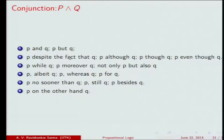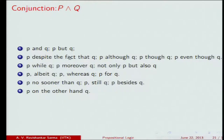Conjunction arises from phrases like 'P and Q,' 'P but Q,' 'P although Q,' 'P though Q,' 'P even though Q,' 'P despite the fact that Q,' 'P whereas Q,' 'P nevertheless Q,' 'P nonetheless Q,' 'not only P but also Q,' 'P moreover Q,' 'P however Q' — all of these are translated into the simple conjunction P∧Q.